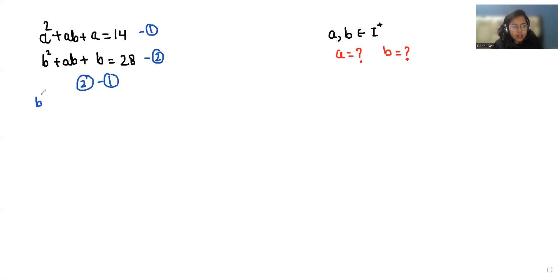So we can write this as b² + ab + b minus (a² + ab + a) = 28 - 14. So b² + ab + b - a² - ab - a = 14.